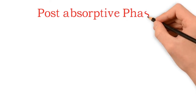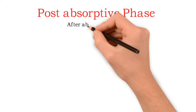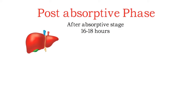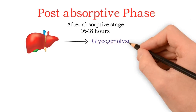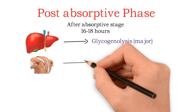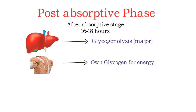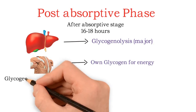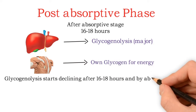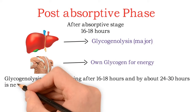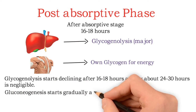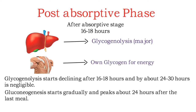The post-absorptive phase starts after the absorptive phase and lasts for 16 to 18 hours. In this phase, liver glycogenolysis becomes the major source of blood glucose and muscle uses its own glycogen stores for energy. Glycogenolysis starts declining after 16 to 18 hours and by about 24 to 30 hours it is negligible. Then gluconeogenesis starts gradually and peaks about 24 hours after the last meal.